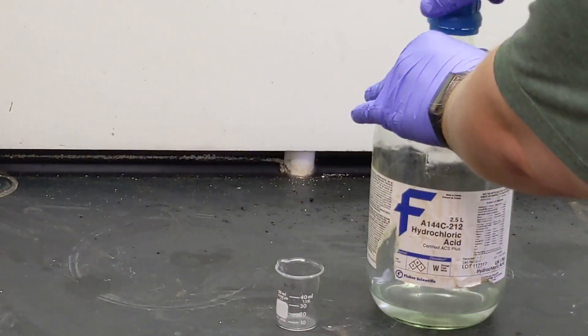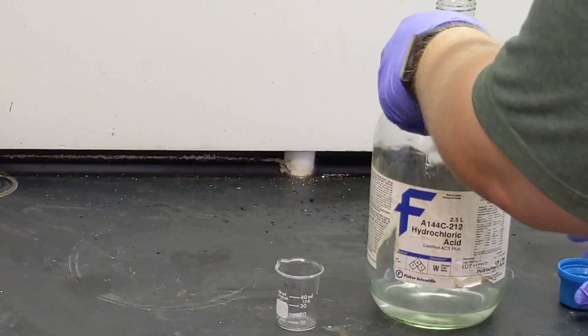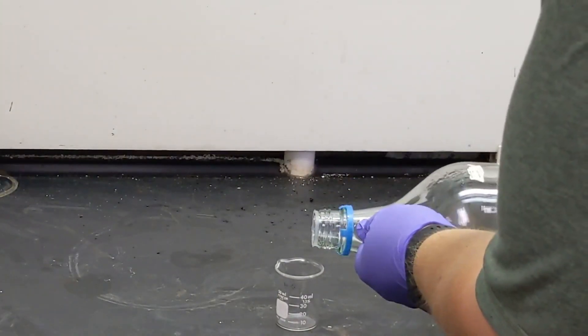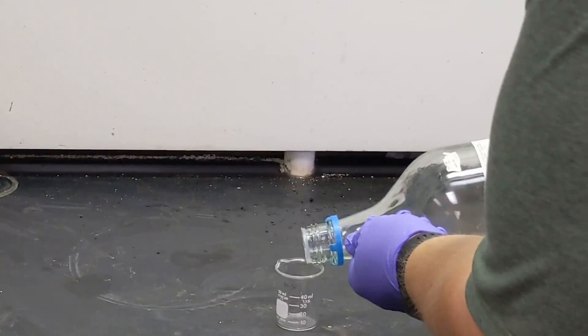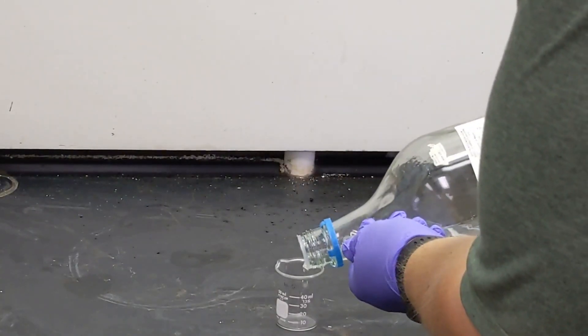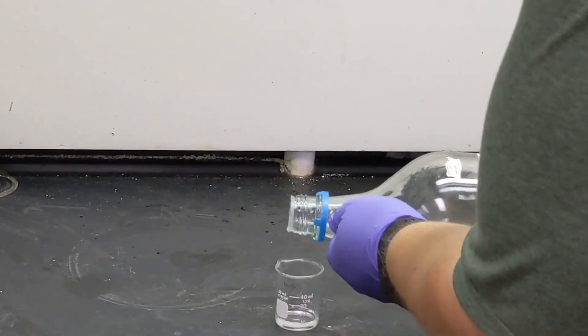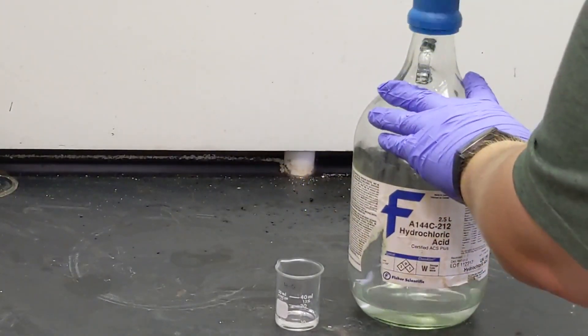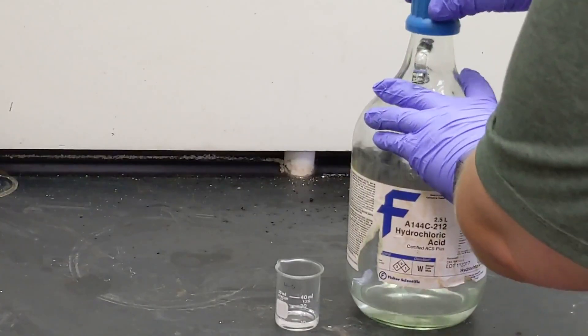We'll remove the cap from our acid, set it topside down, and then carefully pour some concentrated acid into the beaker. Pour slowly to avoid splashes. When we have a small amount, put the bottle down and return the cap to the acid container.